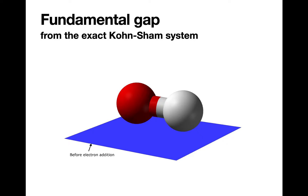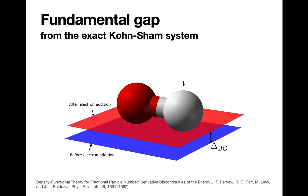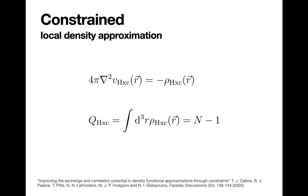It is well known that one can, at least in principle, obtain the fundamental gap, or band gap, from the Kunsham system. The exact Kunsham potential experiences a discontinuous, spatially constant shift, delta_bg, when the system's electron number infinitesimally surpasses an integer, first proposed by John Perdew and co-workers. So, can an approximation capture this shift in the Kunsham potential in order to allow the gap to be obtained directly from the Kunsham system?